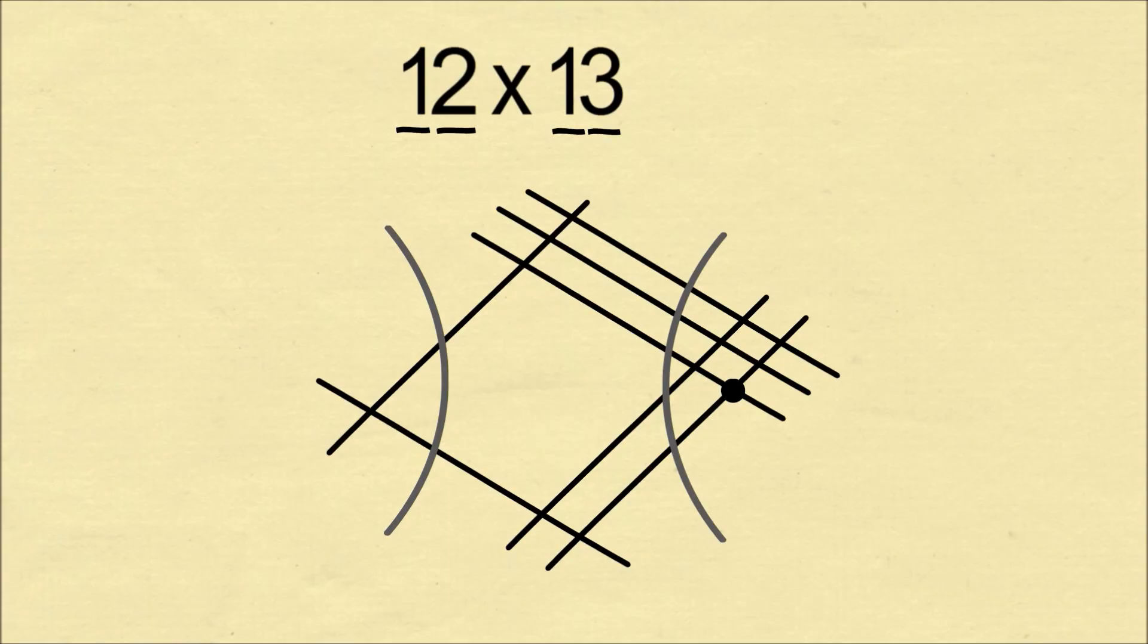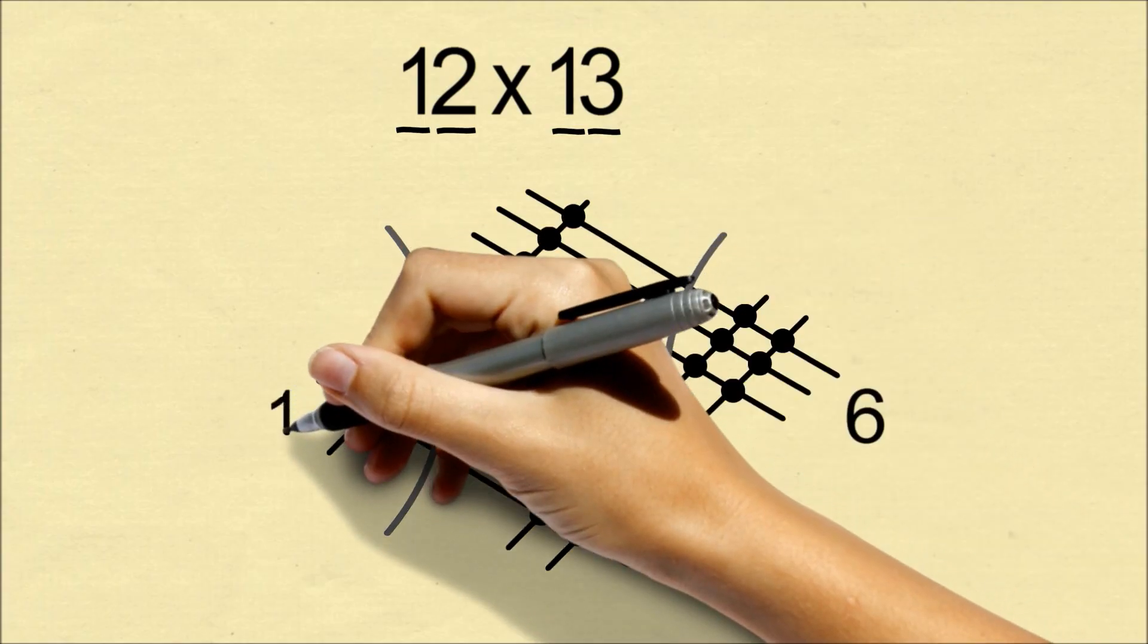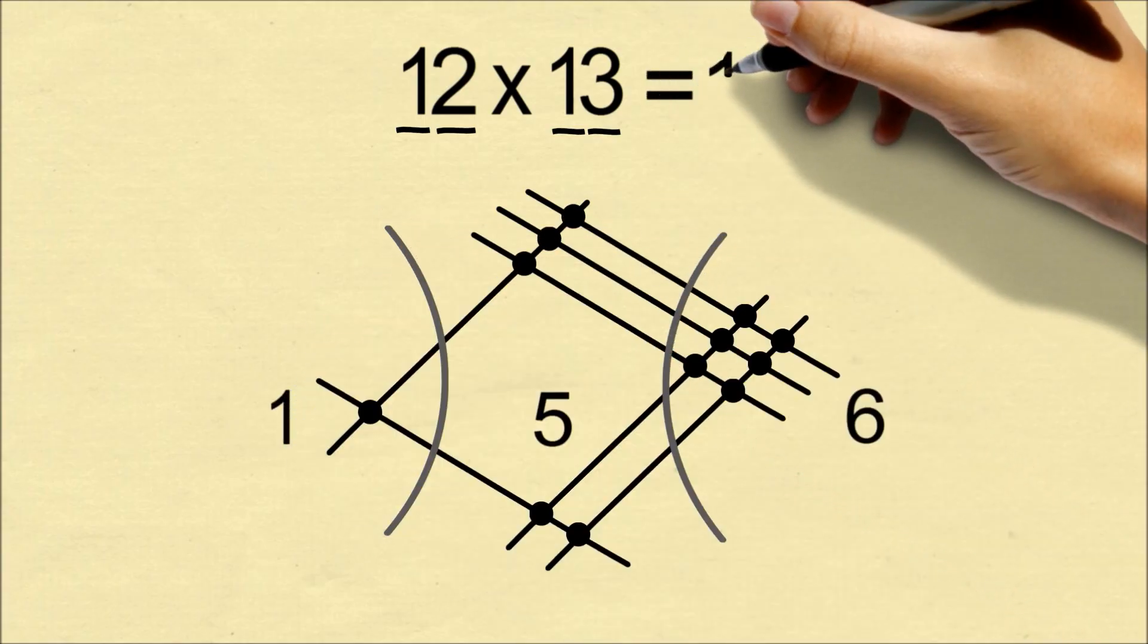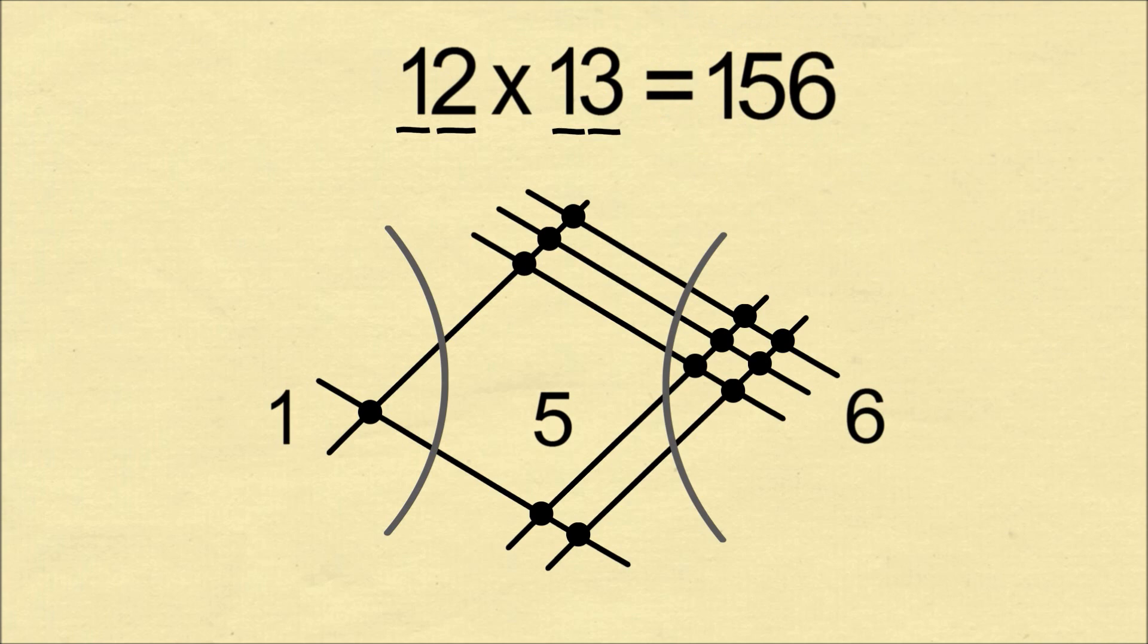Now we will group intersections that are vertically aligned and count the number of intersections in each group. There are six intersections on the right, five in the center, and one on the left. We can combine these numbers to get to our answer of 156.